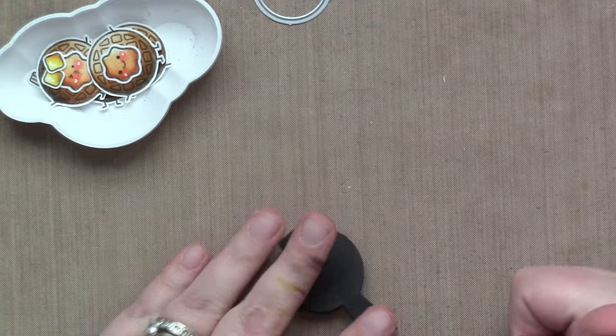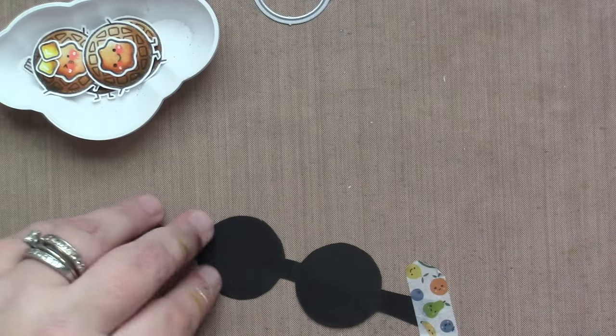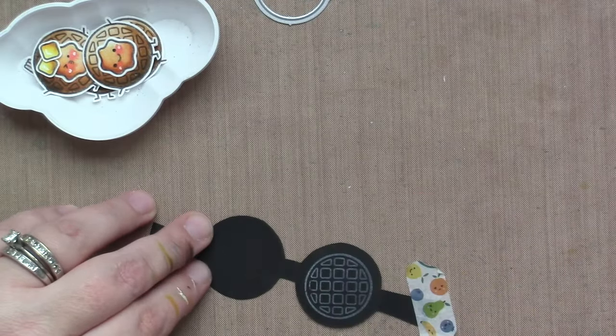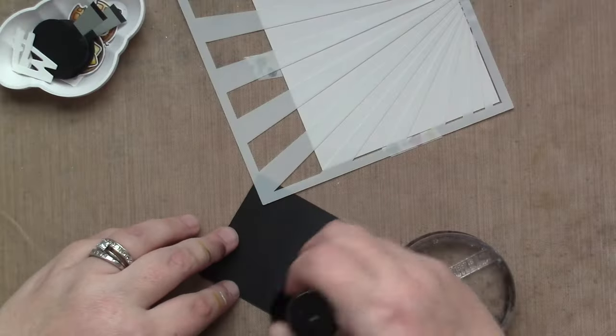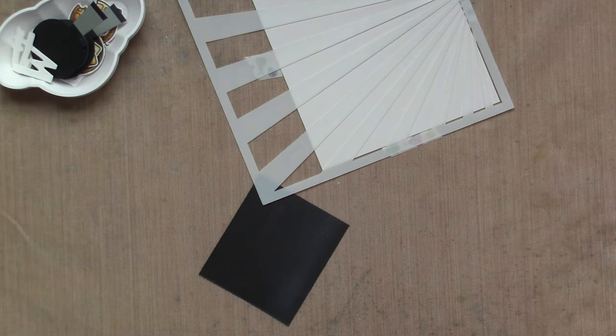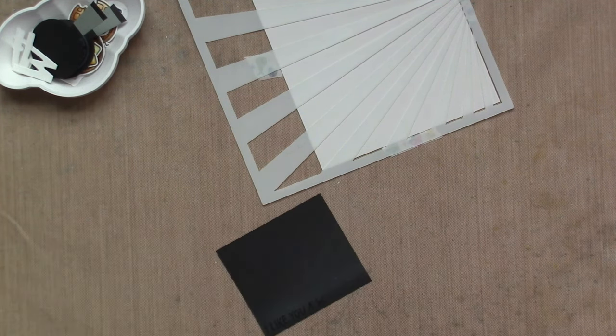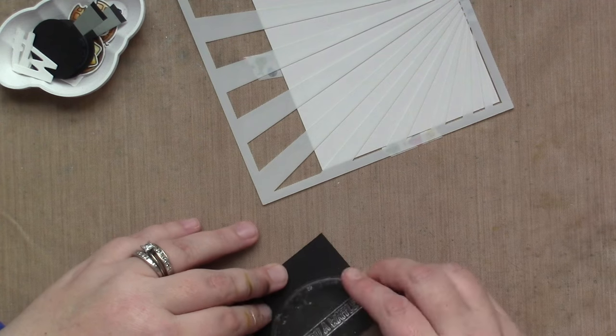I am just going to stamp that full waffle image inside the waffle iron with some white ink. I don't want it to be super bright so I wouldn't white emboss it, but I do want it to show the hint of the waffle lines so that it looks like a waffle iron when you open it.